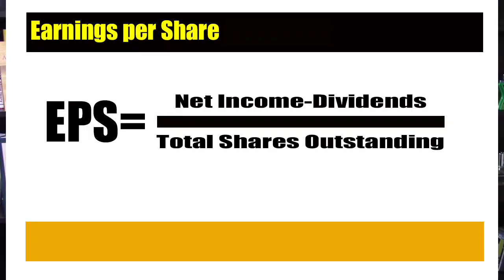The EPS is calculated by taking the company's profit, minus dividends if they do pay a dividend, and dividing it by the number of outstanding shares.